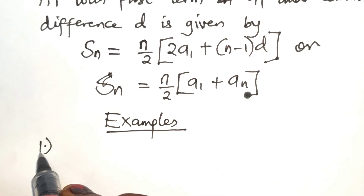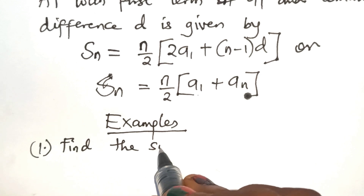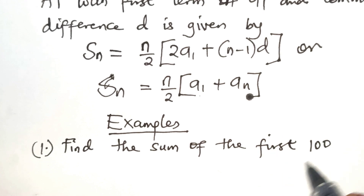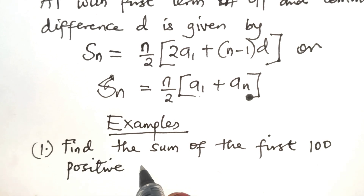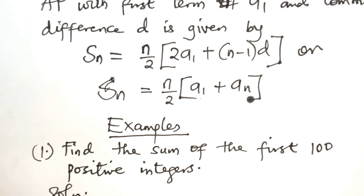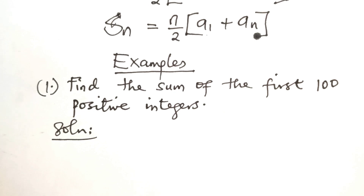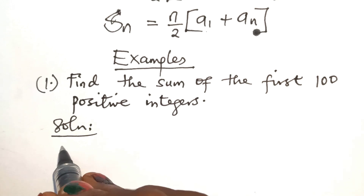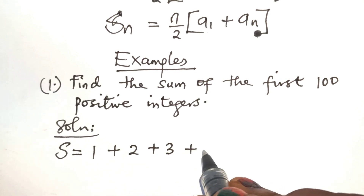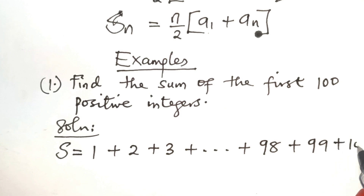Example 1. Find the sum of the first 100 positive integers. We are going to solve this. Let's assume that the sum of the first 100 positive integers is S. Then S is equal to 1 plus 2 plus 3 plus dot dot dot plus 98 plus 99 plus 100. 100 is the last term.